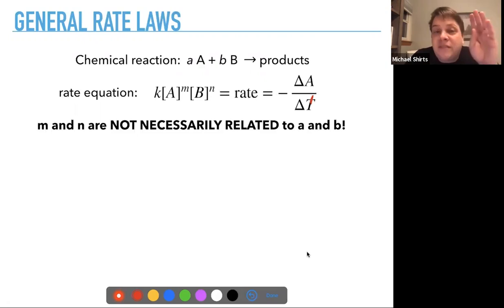Now here's an important fact. These factors m and n are not necessarily related to the stoichiometric coefficients a and b at all, because for reasons we'll get into when we talk more about reaction mechanisms, they're not necessarily related at all. They have to be discovered independently, and frequently they can be zero. You could have no dependence on one of the reactants and just depend on one reactant, so we have to learn what they are experimentally.